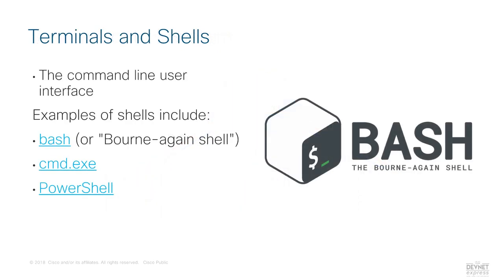While many graphical interfaces and applications are available for developers today aimed at increasing developer productivity, as a developer you're going to need a command line terminal to run code and interact with the services and systems underlying your applications. Many times the most productive tools available are built as command line tools. A shell is a command line user interface for interacting with your computer. There are many different options across operating systems. Examples include Bash — the Bourne-again shell — common for Unix, Linux, and macOS; cmd.exe, the native command line interpreter for Windows; and PowerShell, a combination shell and scripting framework originally for Windows but now open-sourced and available across platforms.